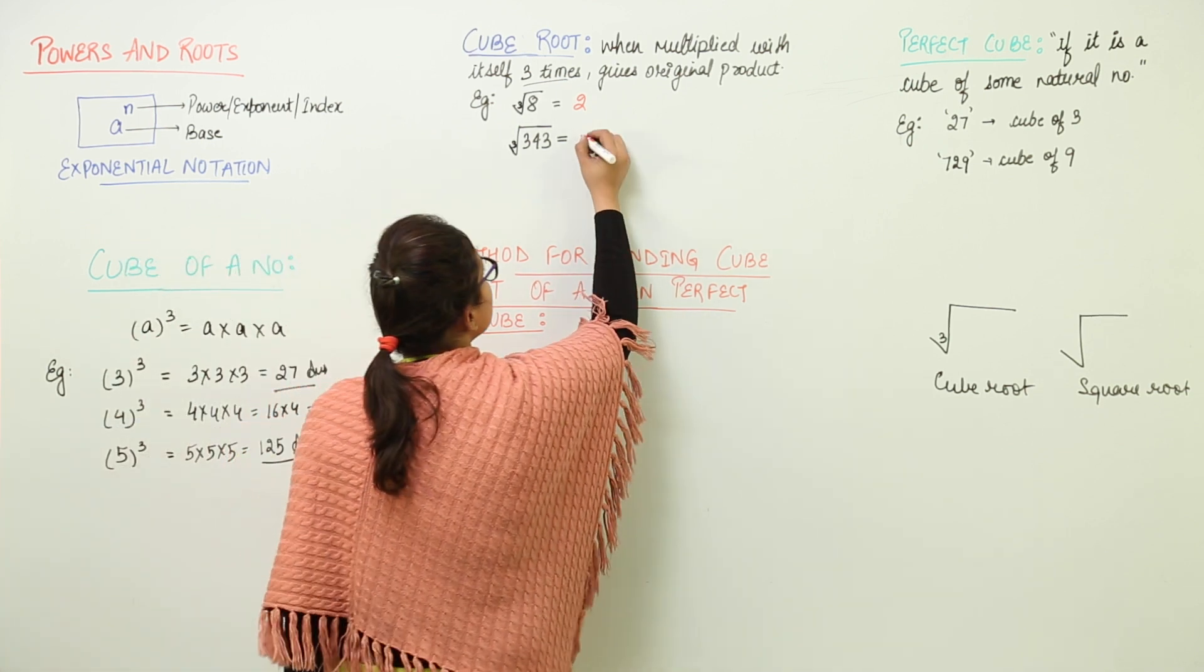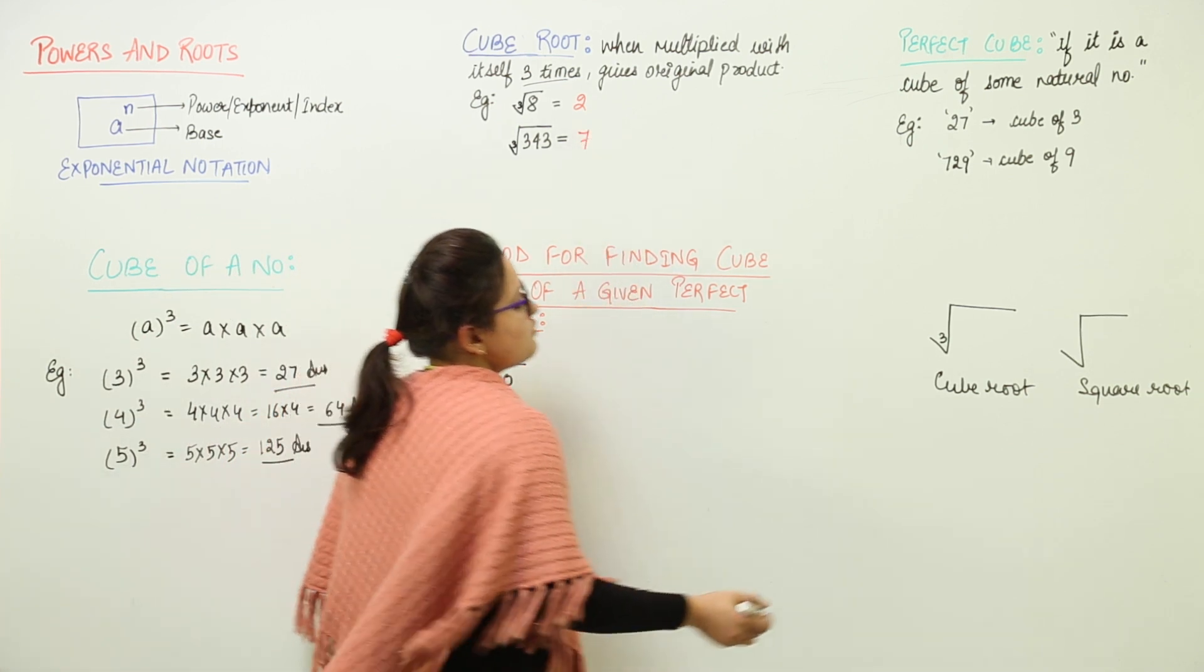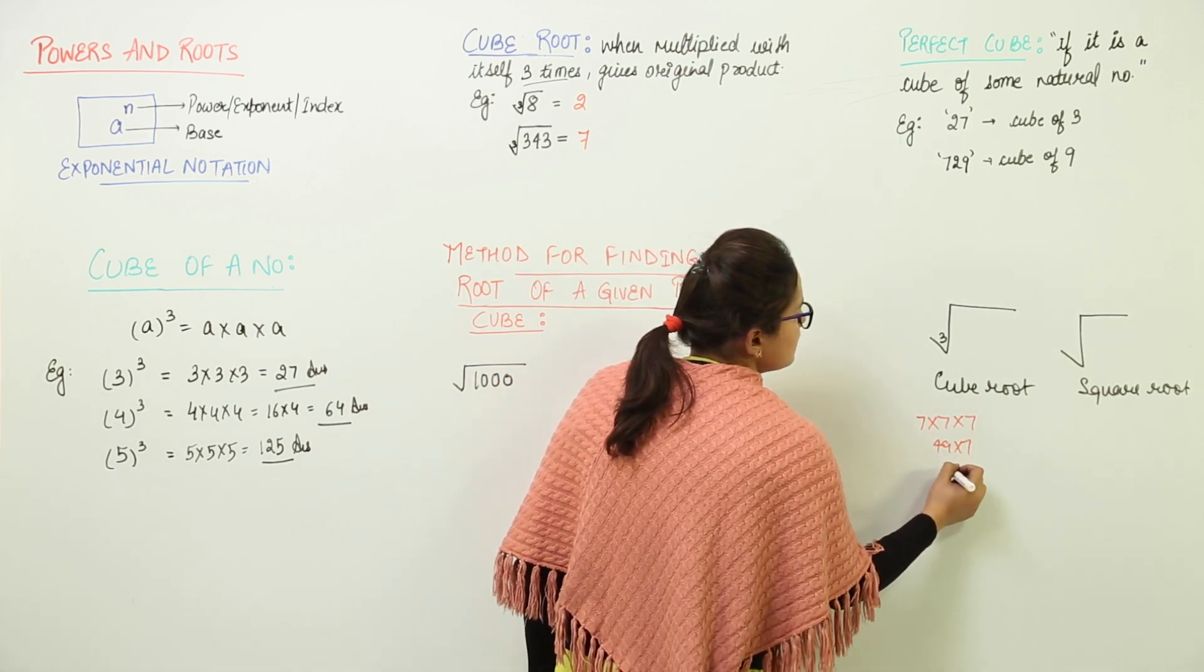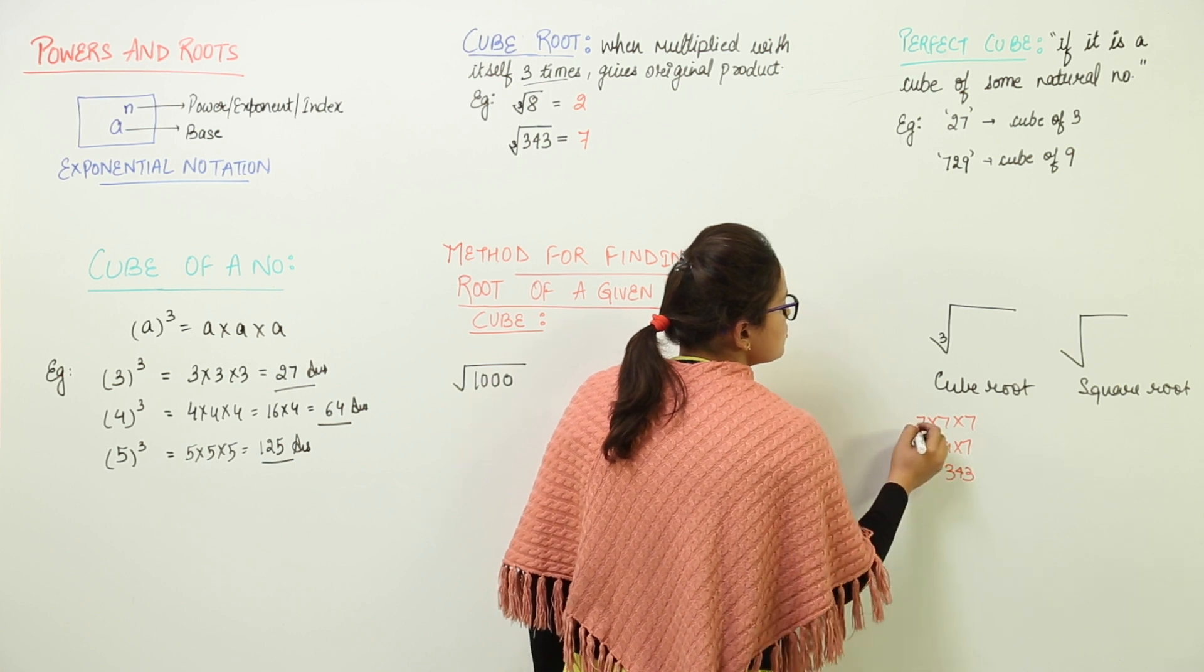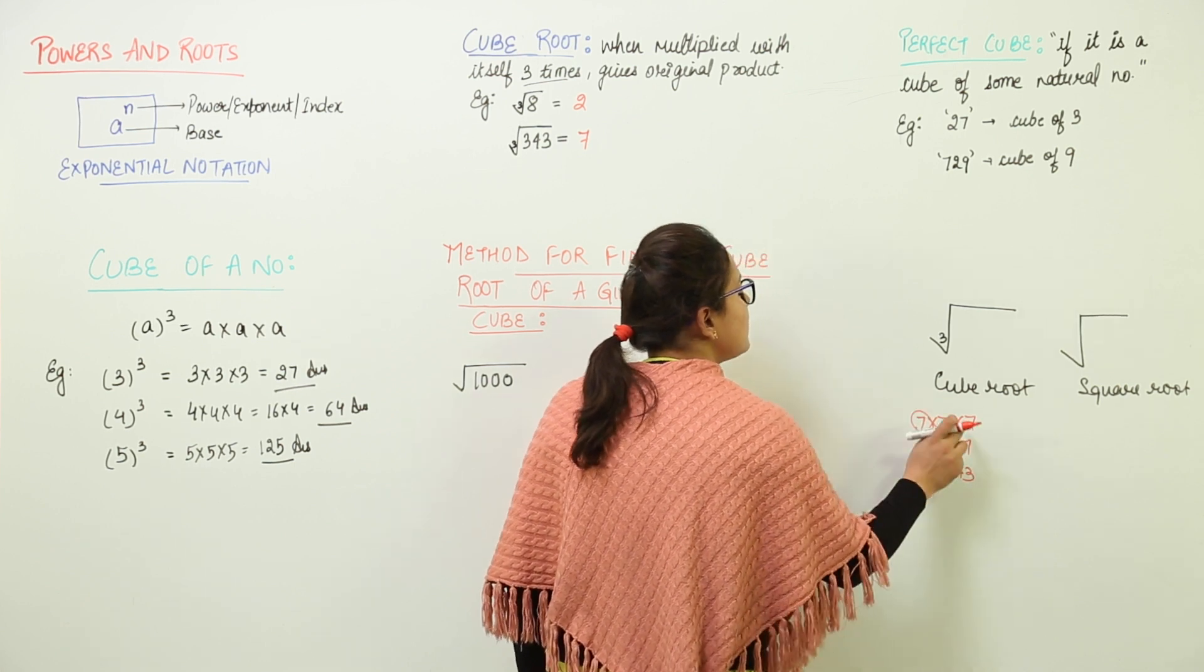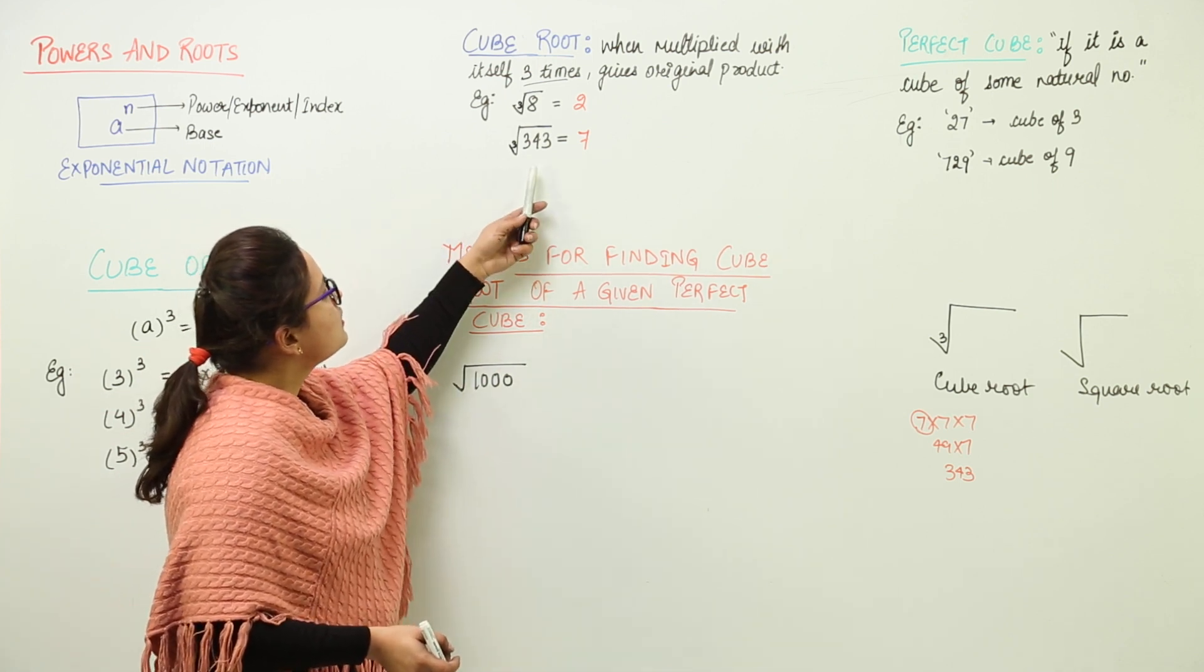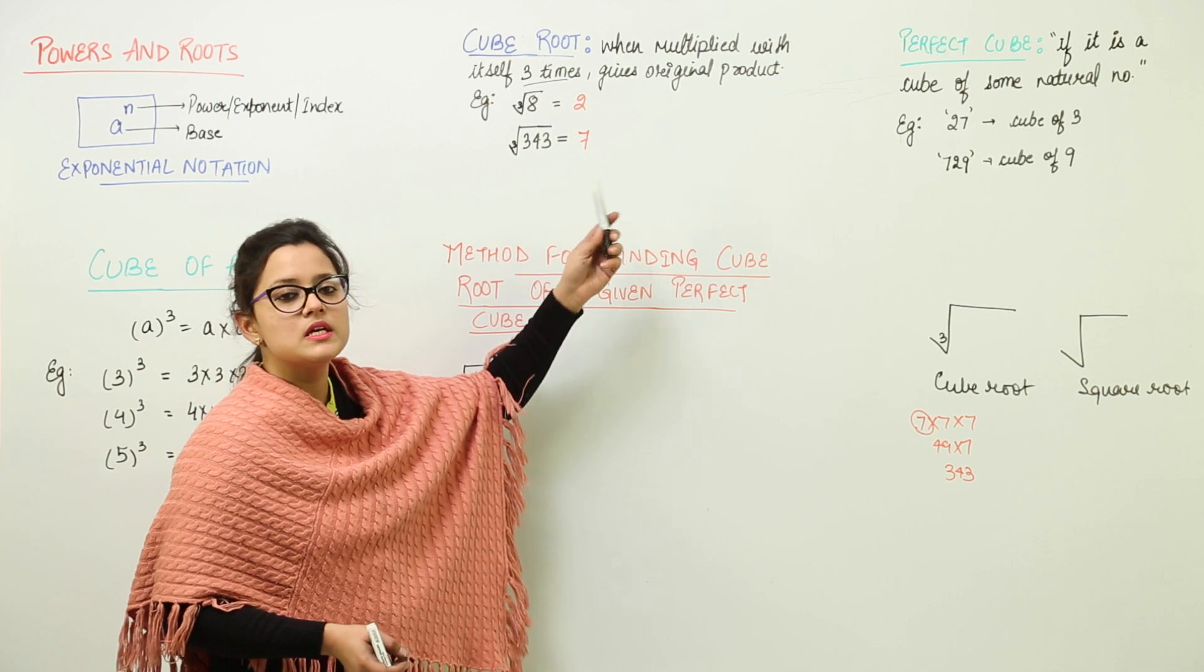I know that will be equal to 7 because if you multiply 7 three times you would get 49 into 7, and that gives you 343. So 7 is the number which is multiplied with itself 3 times and it gives you 343. So 343 cube root is actually 7.